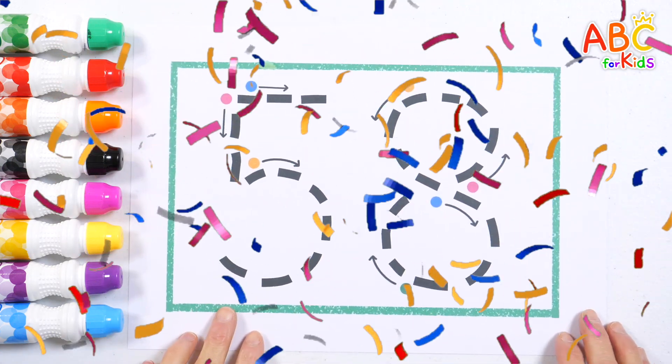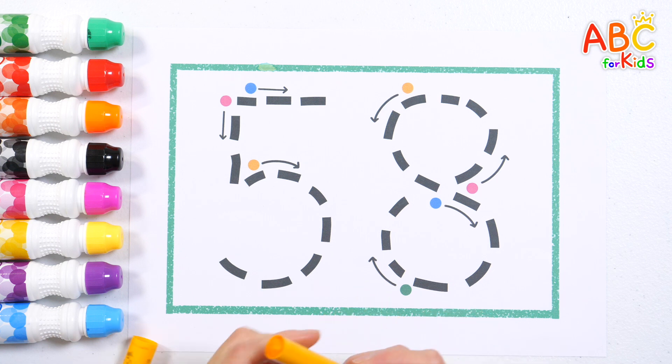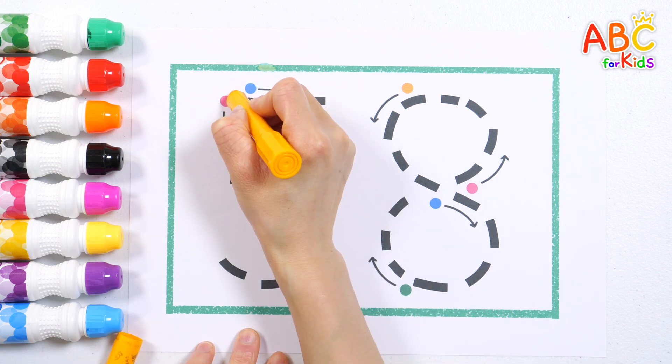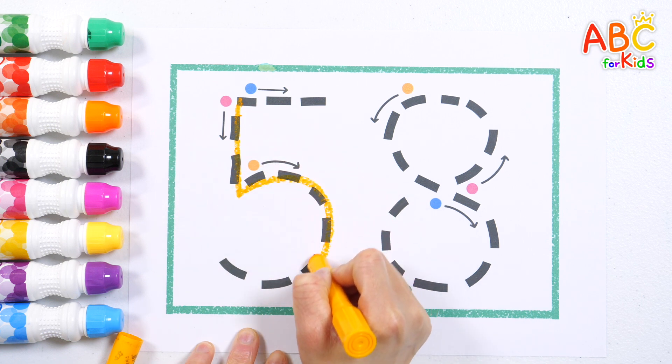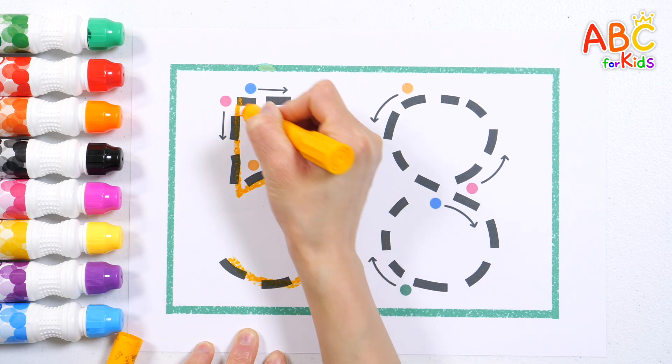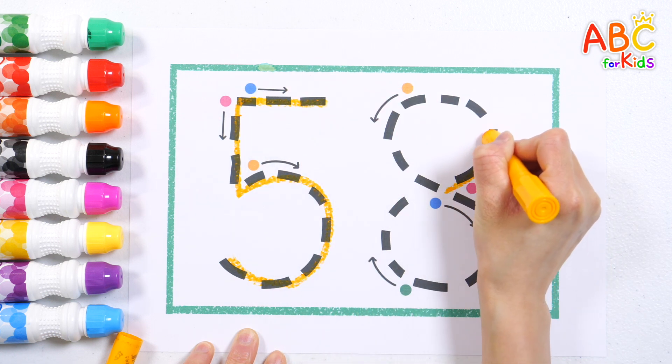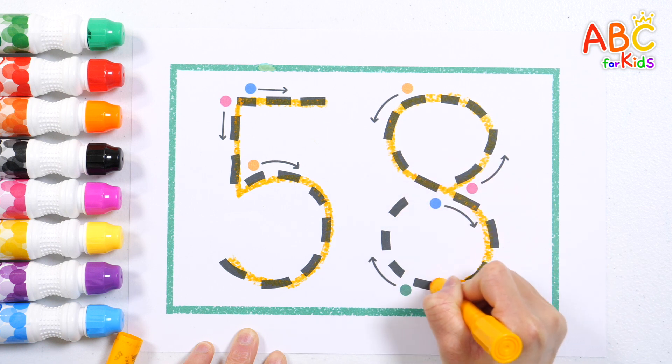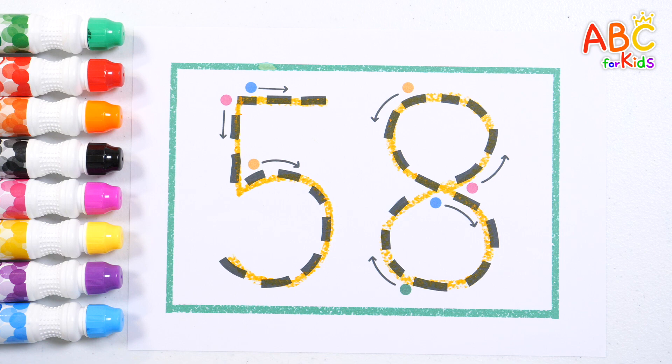Let's learn how to write the number 58. Write it down in the direction of the arrows in the order of red, yellow, and blue. 58! Good job!